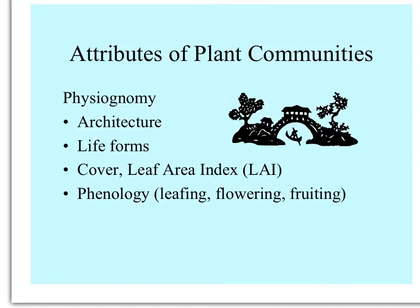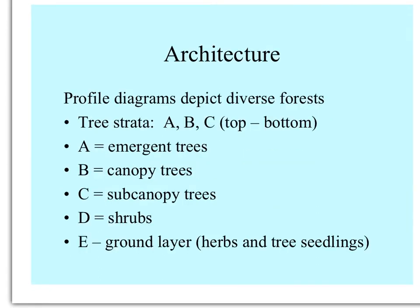Let's look at the different attributes of plant communities that can be studied, starting with physiognomy — what they look like. Plant architecture was first described by making profile diagrams of forests, sometimes when forests were cut down and people would measure the trees and reconstruct these diagrams. They envision different strata from top to bottom: the A layer are emergent trees that poke above the canopy; B is canopy trees; C, the sub-canopy trees; D, the shrub layer; and E, the ground layer of herbs and tree seedlings.